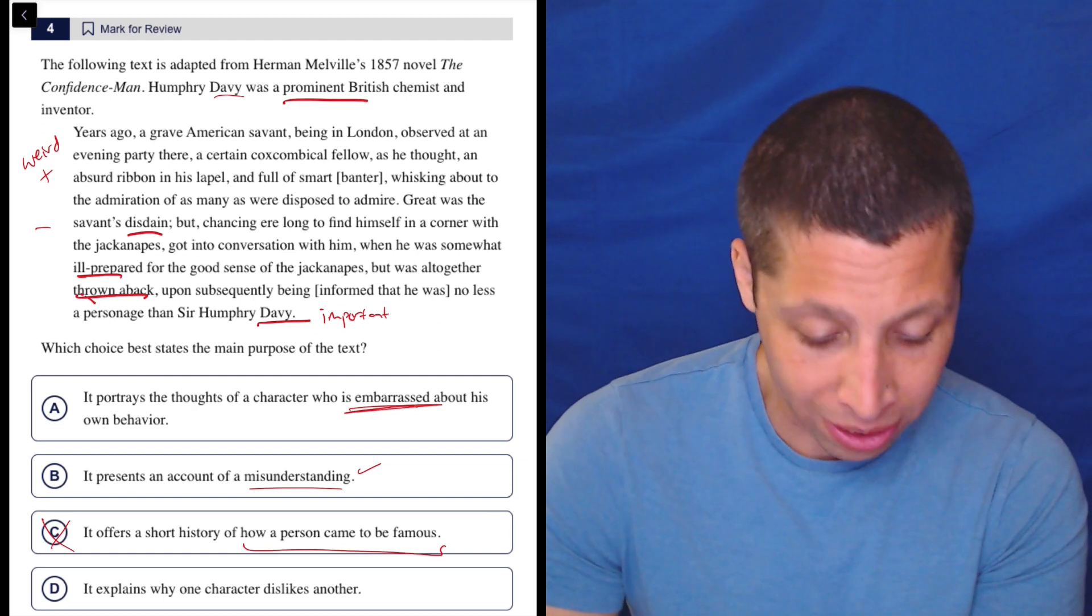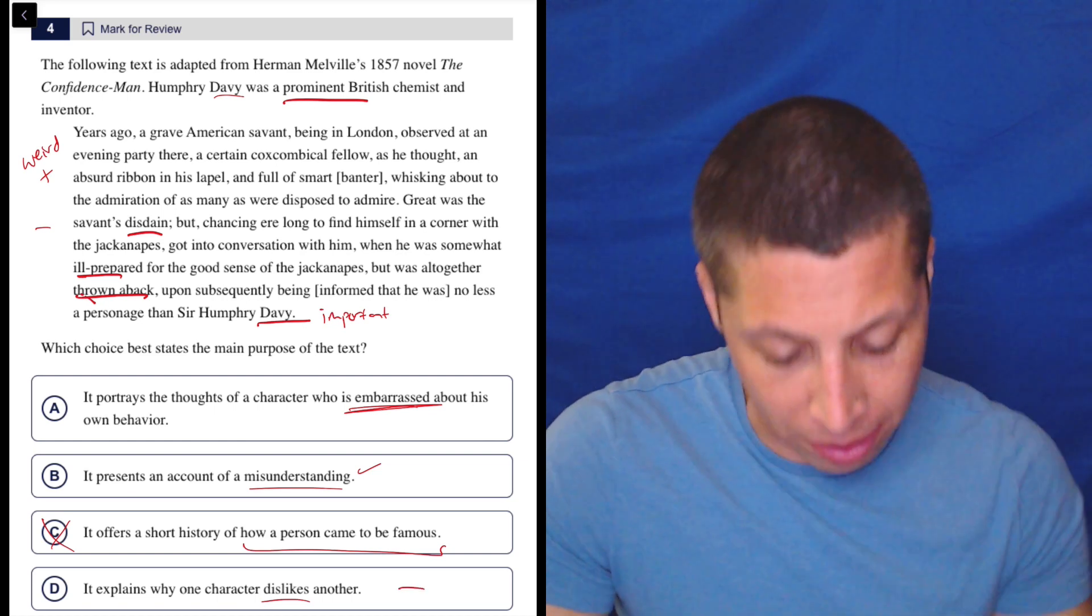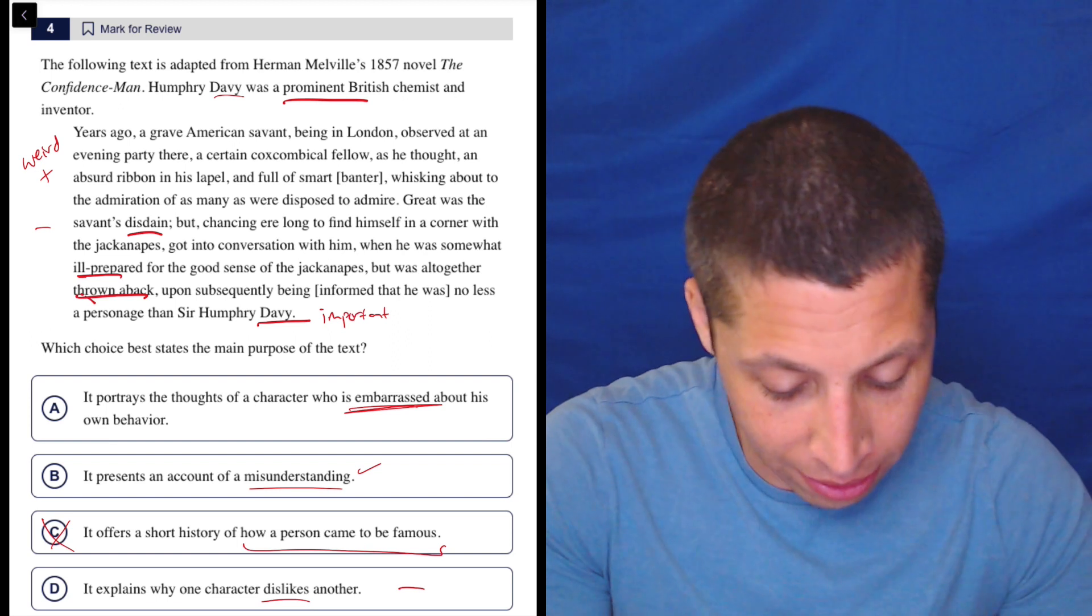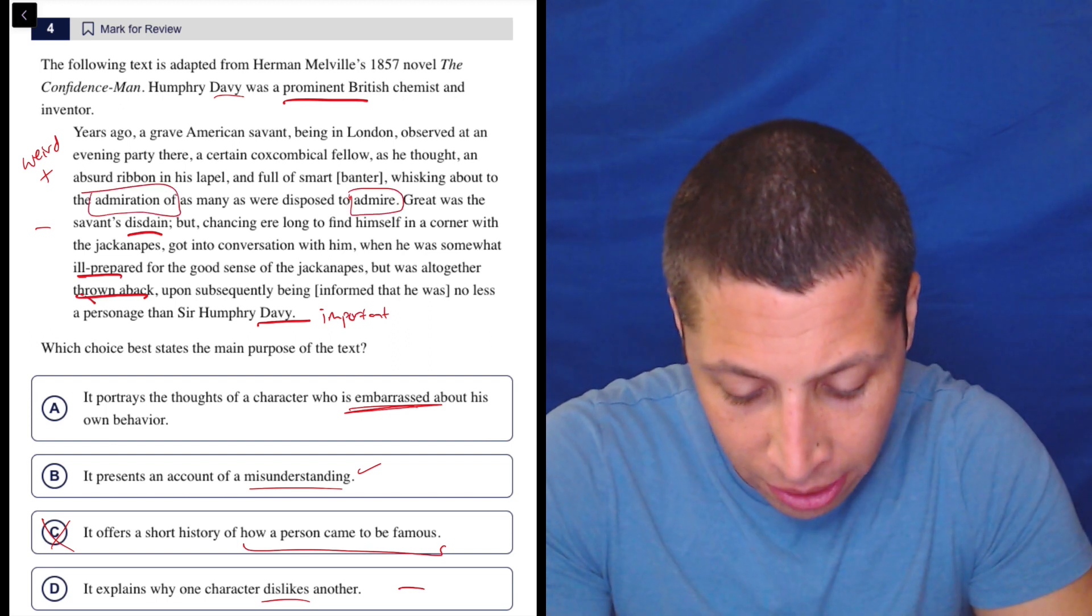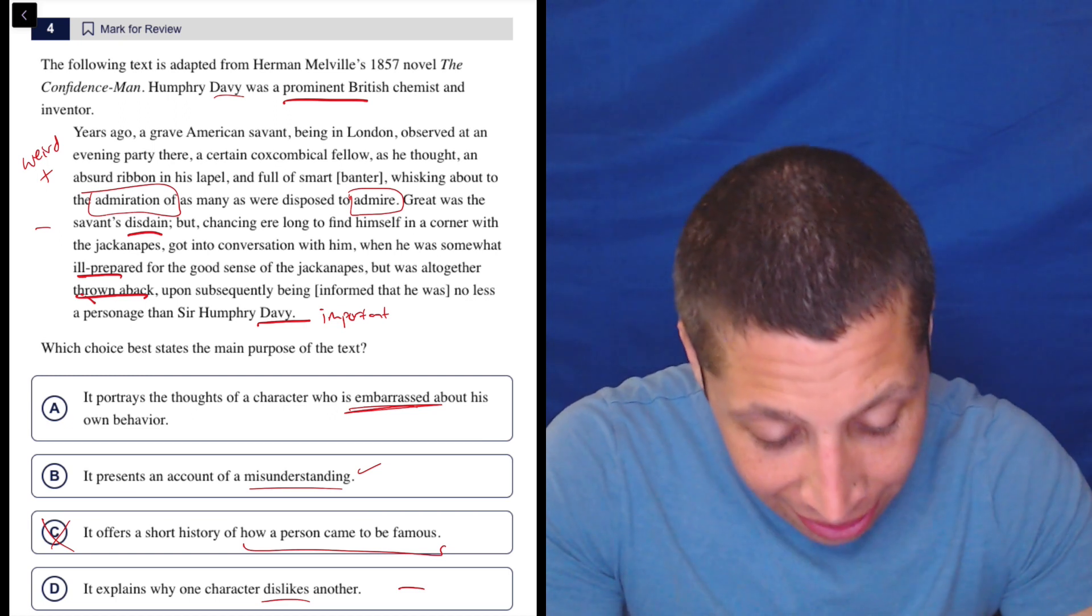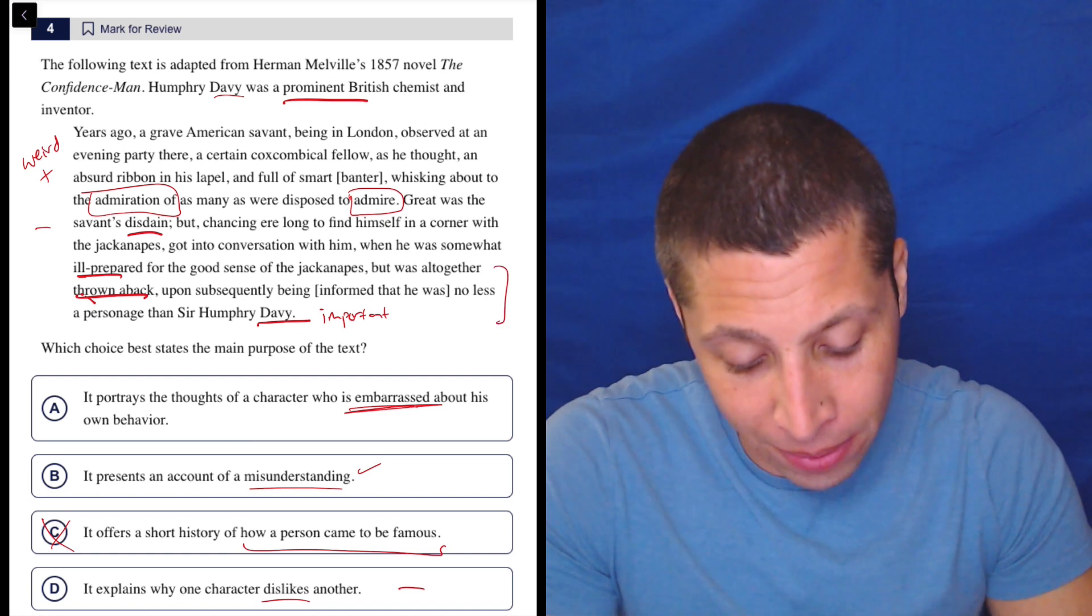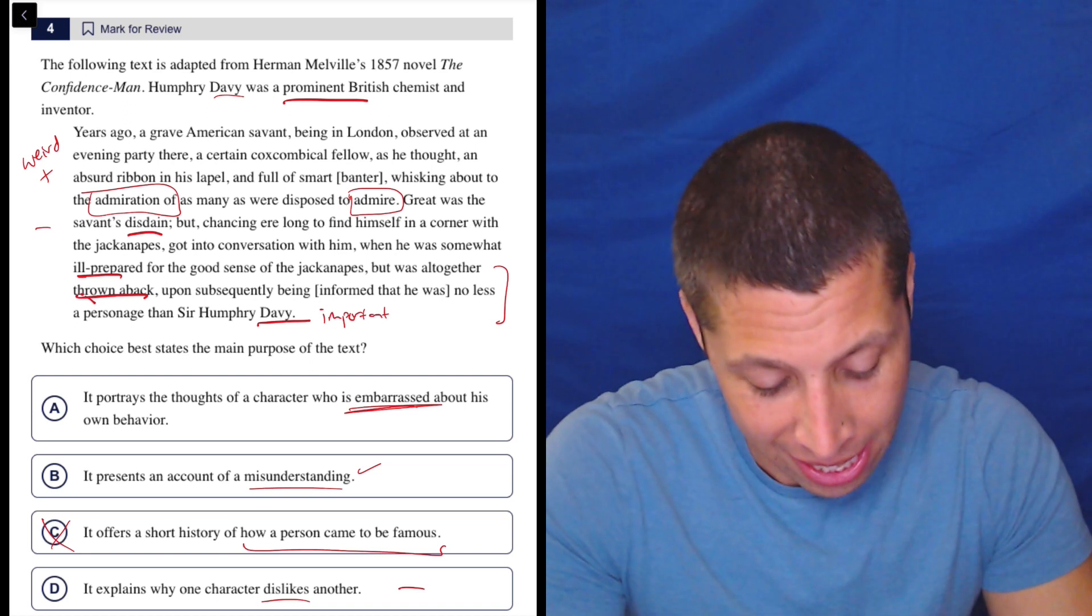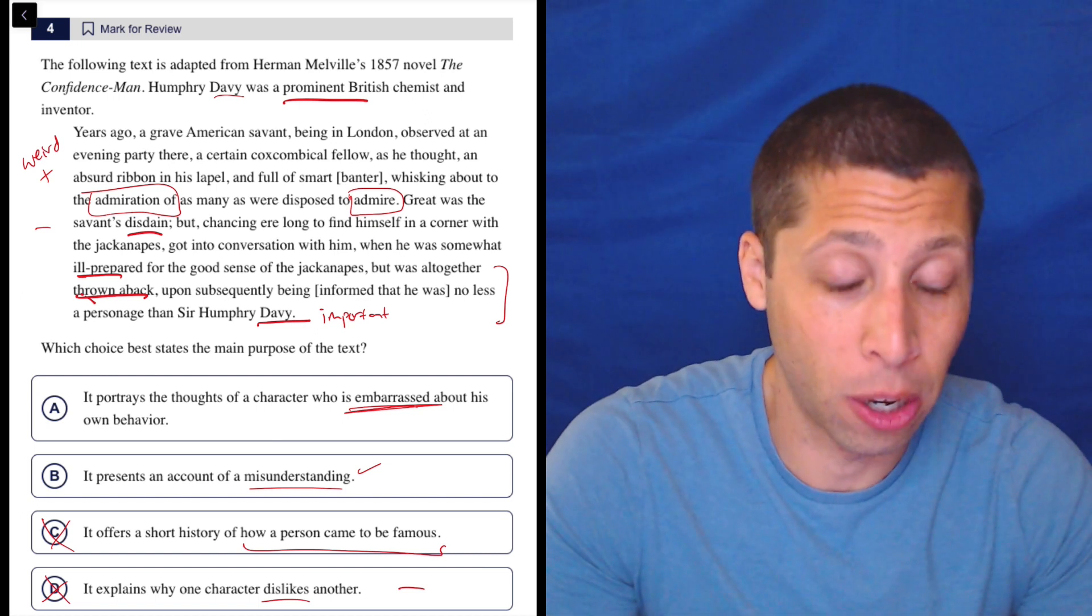D, it explains why one character dislikes another. Again, this is tempting. Dislikes is obviously very strong. The connotation would make this very negative. I don't know. These people are admiring him. Admiration. I don't know. It's just, is it really dislike? At the end here, he's thrown aback that he's talking to Sir Humphrey Davy. But does that mean he dislikes Sir Humphrey Davy?